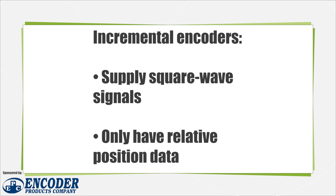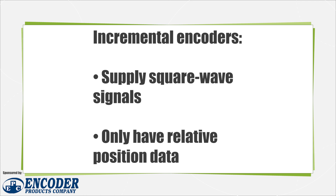Incremental encoders generally supply square wave signals in two channels, A and B, which are offset, or out of phase, by 90 degrees. This helps in determining the direction of rotation. The output signals of an incremental encoder only have information on relative position, not absolute position. In order for the encoder to provide any useful position information, the position of the encoder has to be referenced in some way, traditionally using an index pulse. Thus, the incremental encoder sends incremental position changes to electronic circuits that perform the counting function.